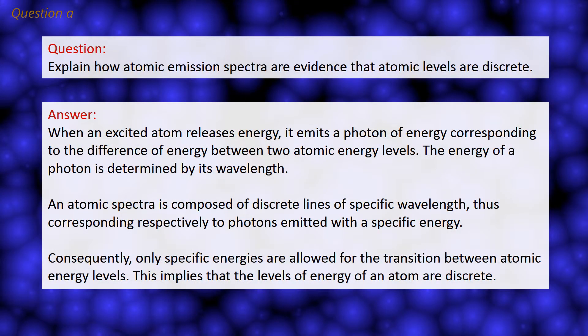When an excited atom releases energy, it emits a photon of energy corresponding to the difference of energy between two atomic energy levels. The energy of a photon is determined by its wavelength. An atomic spectra is composed of discrete lines of specific wavelength, thus corresponding respectively to photons emitted with a specific energy.